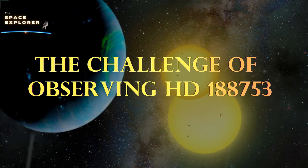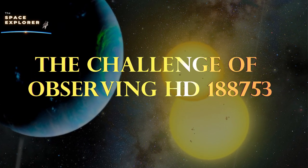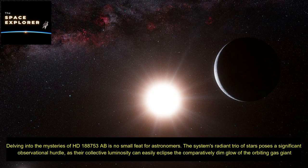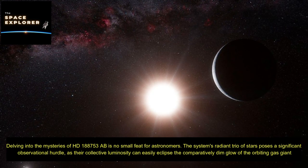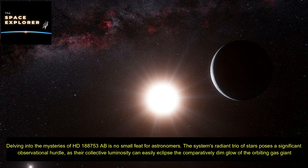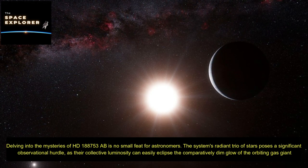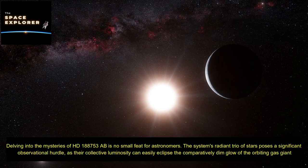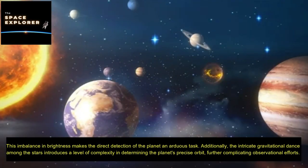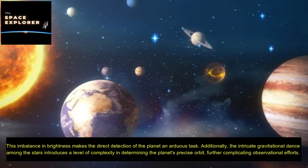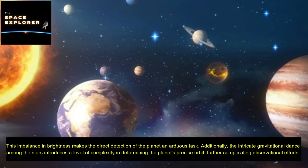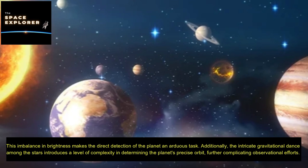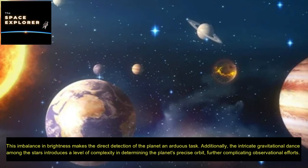The challenge of observing HD 188,753. Delving into the mysteries of HD 188,753 AB is no small feat for astronomers. The system's radiant trio of stars poses a significant observational hurdle, as their collective luminosity can easily eclipse the comparatively dim glow of the orbiting gas giant. Additionally, the intricate gravitational dance among the stars introduces a level of complexity in determining the planet's precise orbit, further complicating observational efforts.